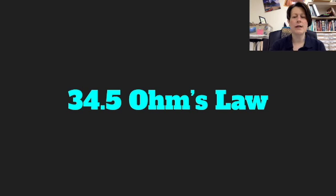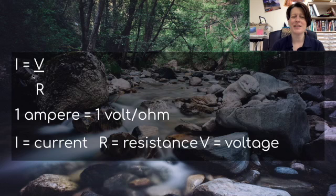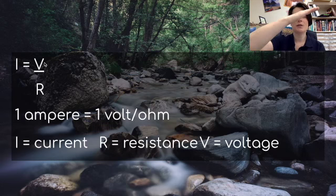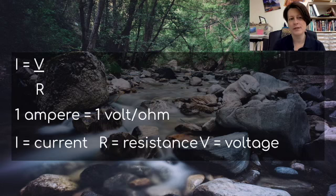Let's take a look at Ohm's Law. Ohm was a scientist who studied resistance — that's why the unit ohms for resistance is named after him. Ohm's Law states that the current in a circuit is directly proportional to the voltage impressed across the circuit and inversely proportional to the resistance of the circuit. As an equation: I (current) equals V (voltage) divided by R (resistance). This makes sense because if our voltage — our potential difference — is higher, we have more flow. If it's flatter with less potential difference, we have less current.